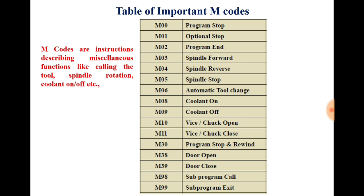The next code is M03, that is for spindle forward. With this code you can rotate your spindle in the forward or clockwise direction. The next code is M04 — with this code you can rotate your spindle in the reverse or anticlockwise direction. The next code is M05, that is used for stopping the spindle. With M05 you can stop the spindle of your machine.